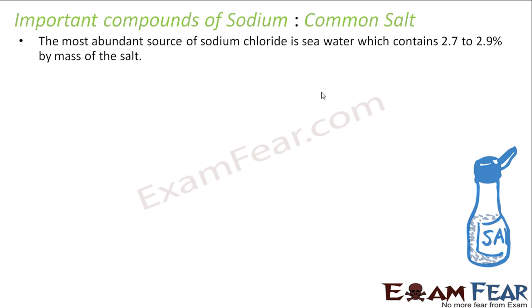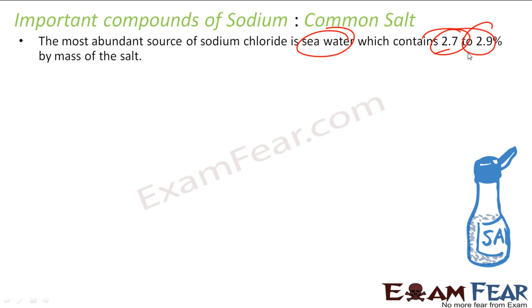Common salt is generally obtained from seawater. If you see seawater, there is a huge salinity — almost 2.7 to 2.9, almost 3 percent by mass it has salt. We just heat the seawater, or by evaporation also you get salt. In many countries, just at the sea beach you will find a lot of salts.